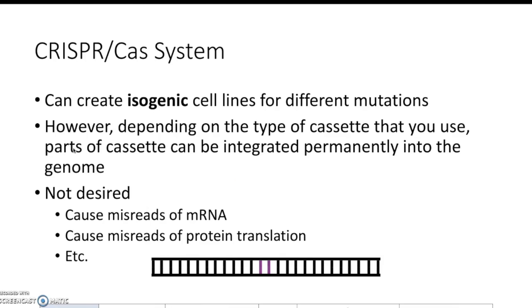CRISPR-Cas9 systems are very applicable because you could create isogenic cell lines for different mutations — isogenic meaning these cell lines differ in just one gene. For the workflow, you transfect cells with your Cas9 and desired template to increase homology-directed repair for template insertion. However, depending on the type of cassette you're using, parts of that cassette can be permanently integrated into the genome, which is not desired because it could create aberrant mRNA transcripts and disrupt protein translation.